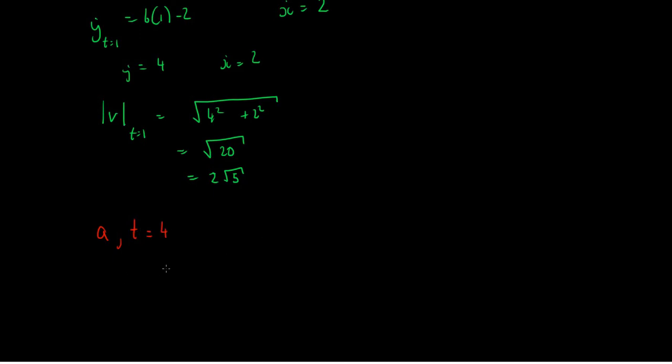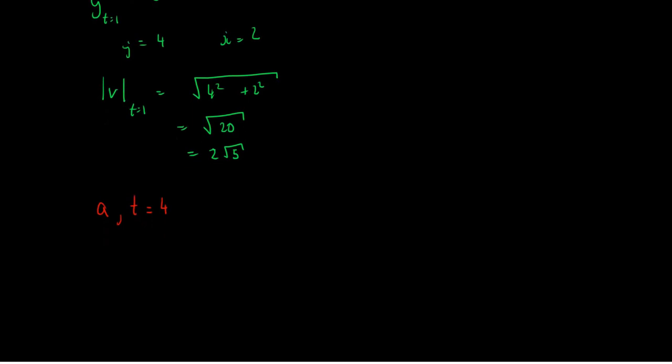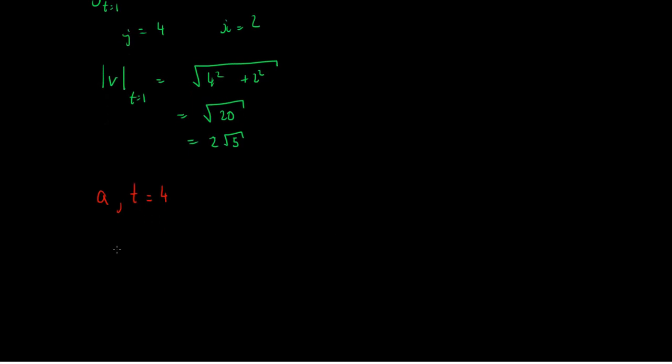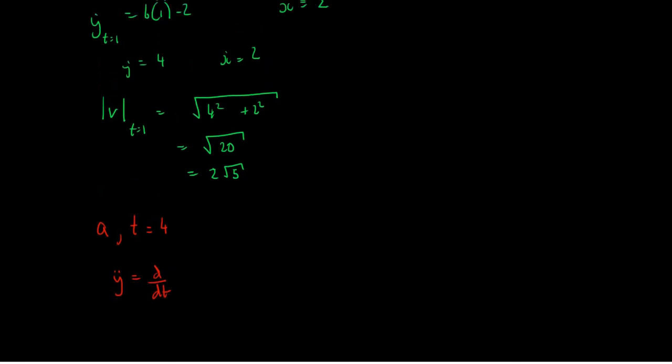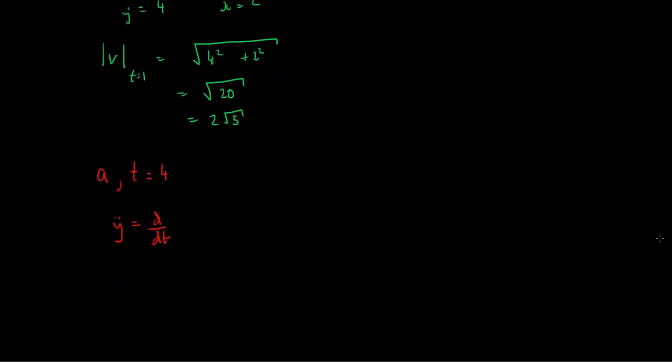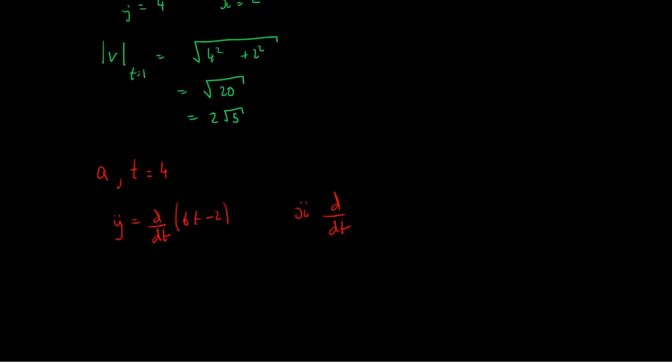Well, acceleration means to take the double derivative or the first derivative of the velocity. So we get y-double-dot is equal to d by dt of the y-expression, which was 6t minus 2. And then x-double-dot is the derivative of our speed expression, which was just 2.